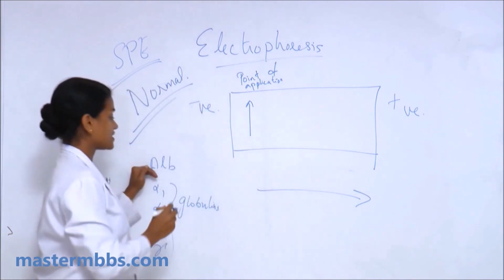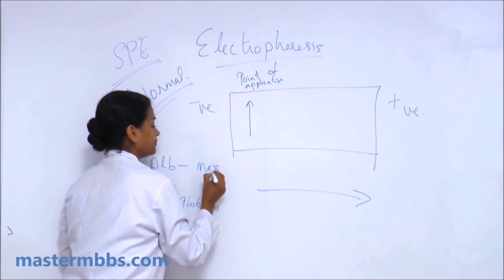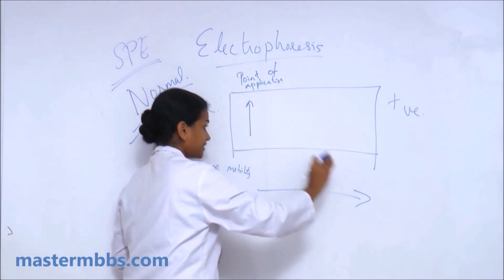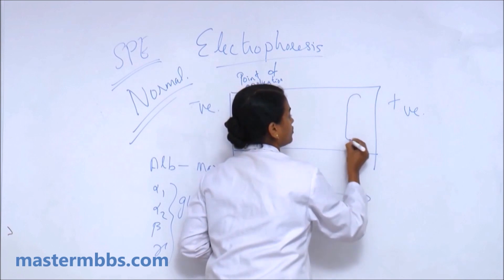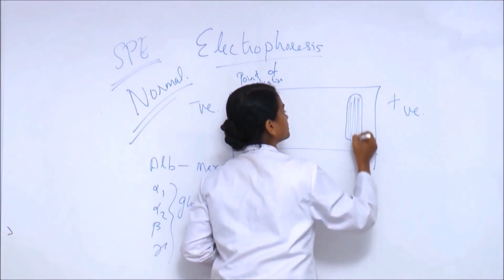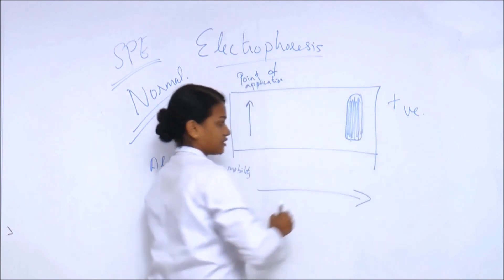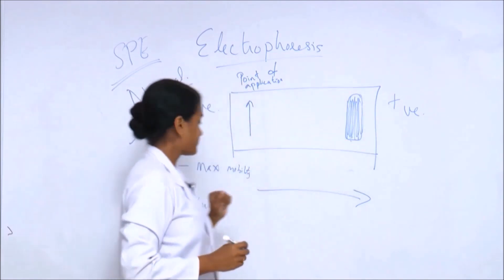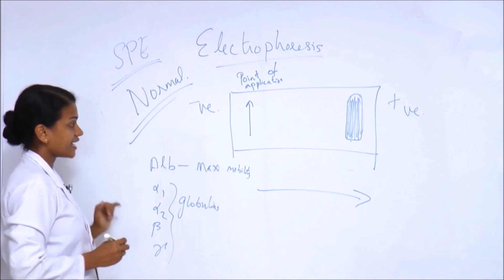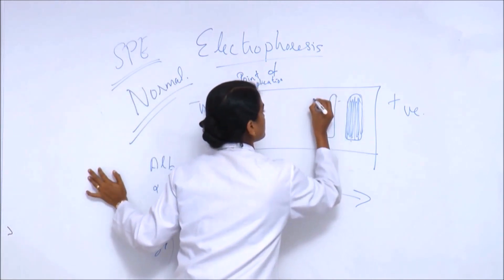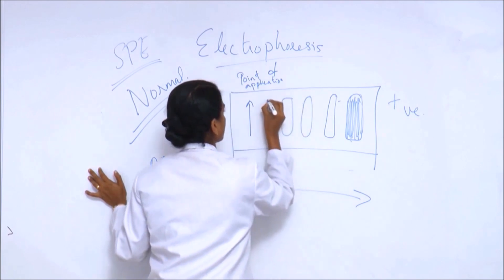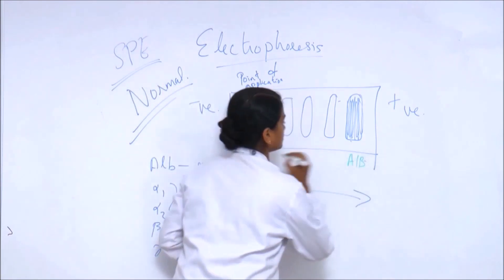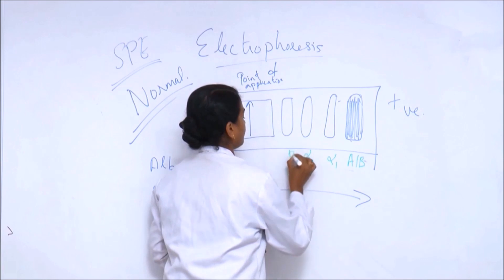Albumin has the maximum mobility - it is the fastest moving protein and migrates first to the positive electrode, appearing as a very thick band. Followed by alpha 1, alpha 2, beta, and a diffuse gamma band. So in the pattern you have albumin, then alpha 1, alpha 2, beta, and gamma.